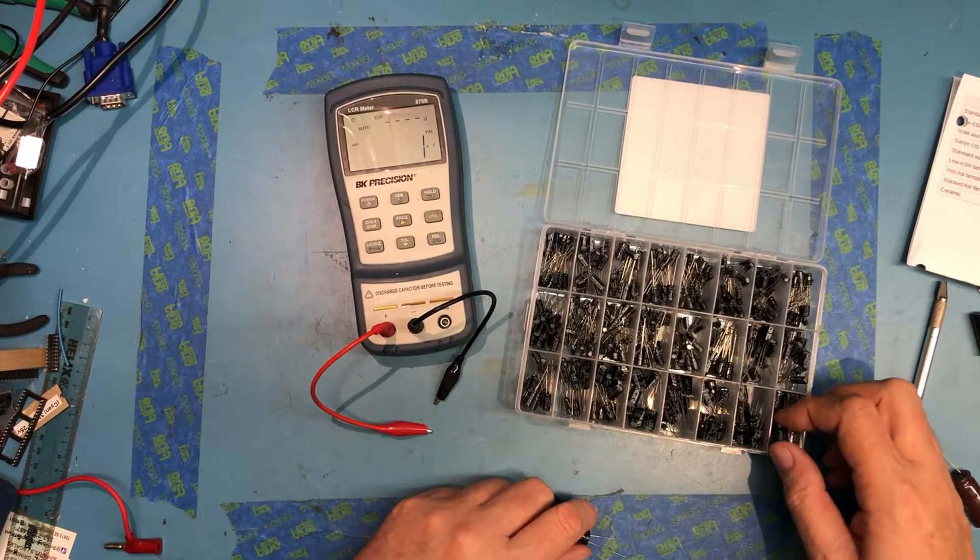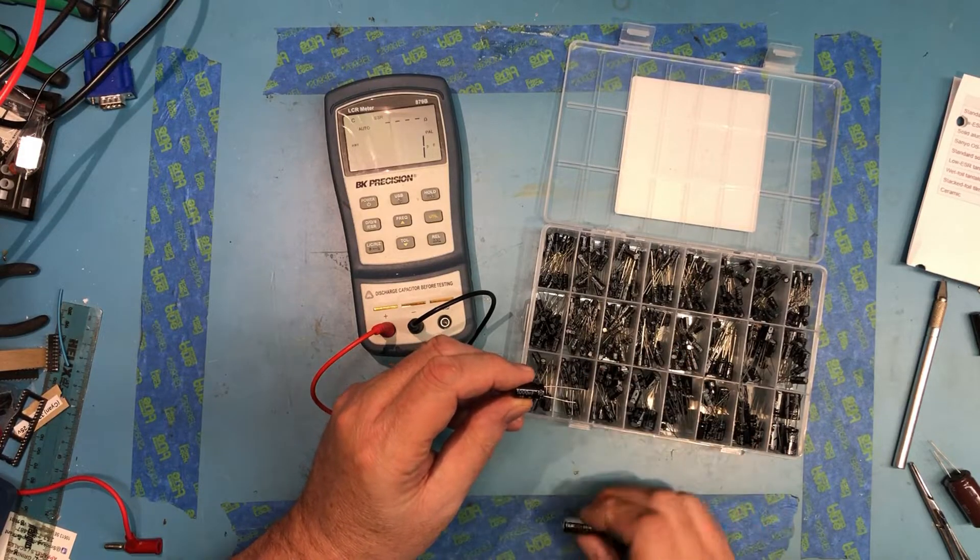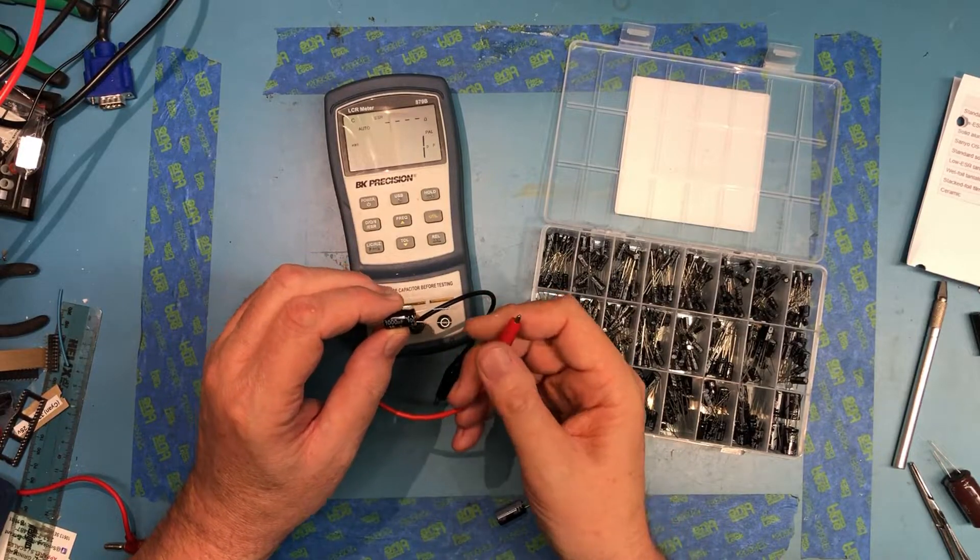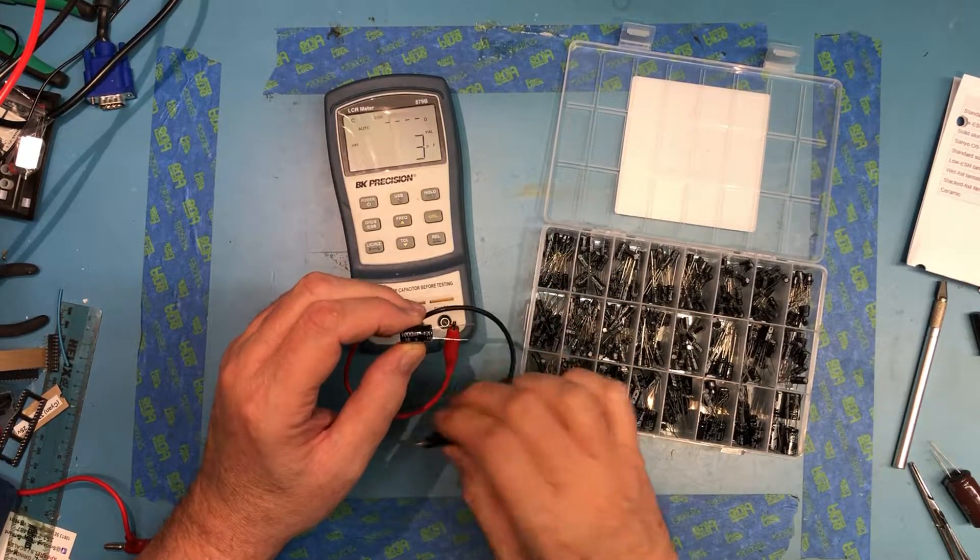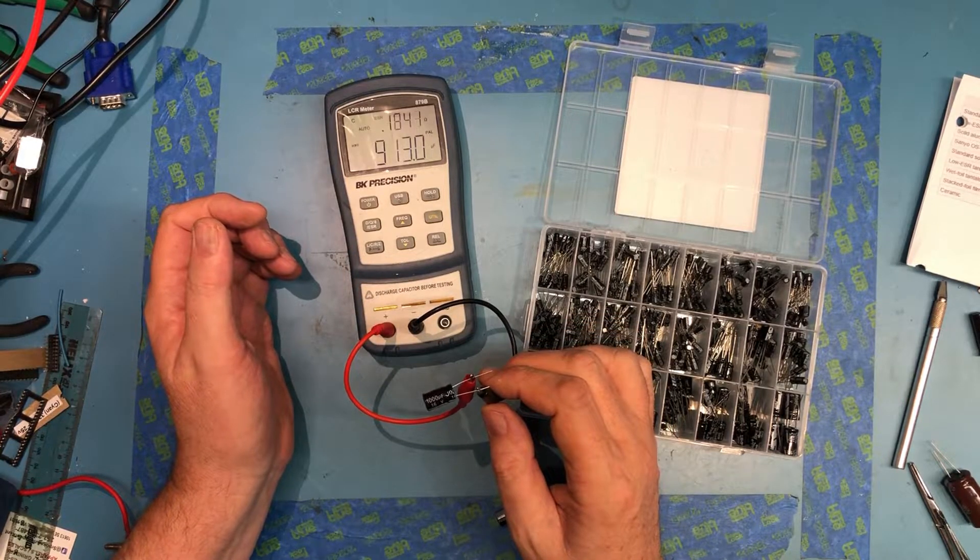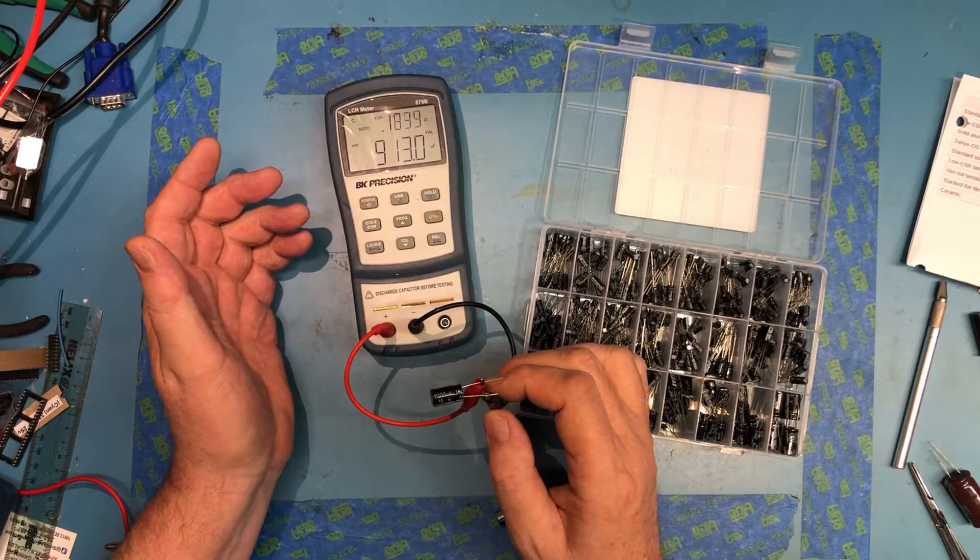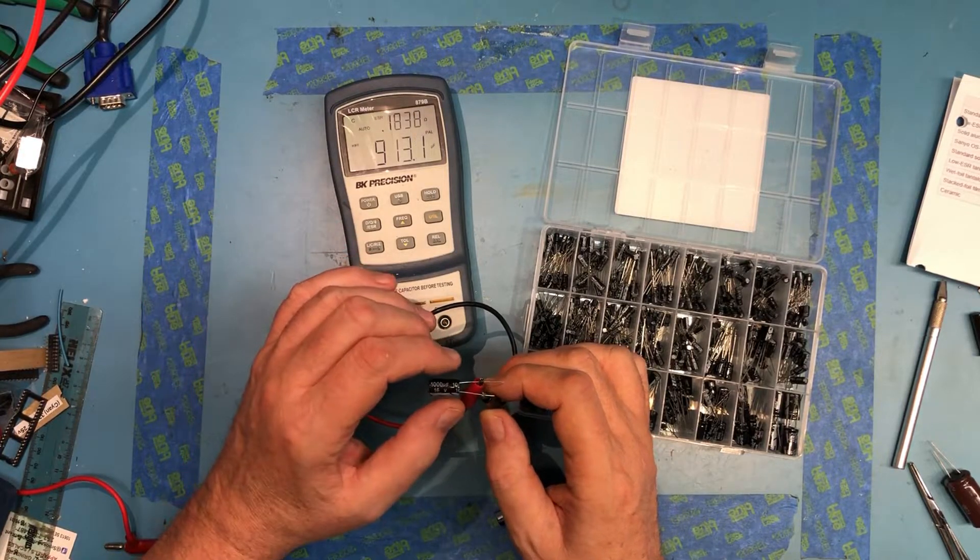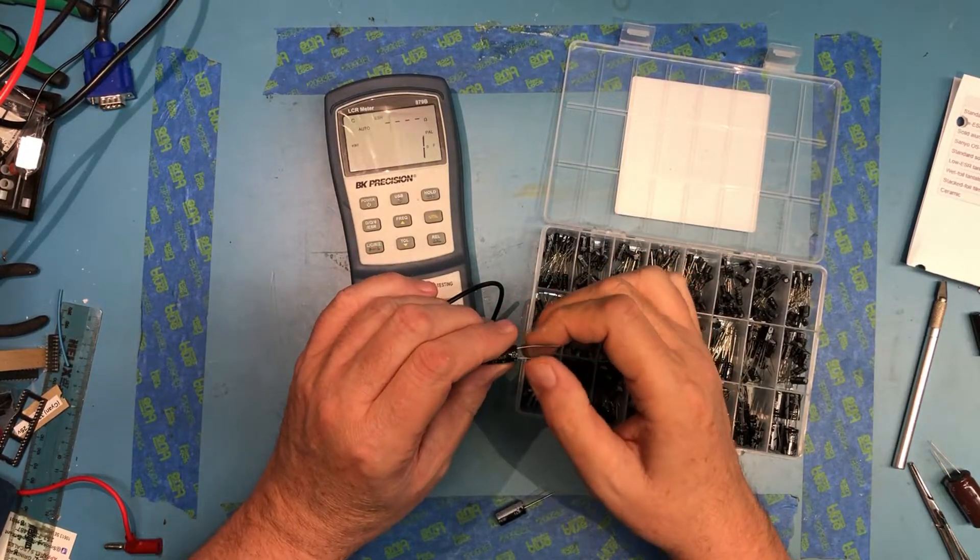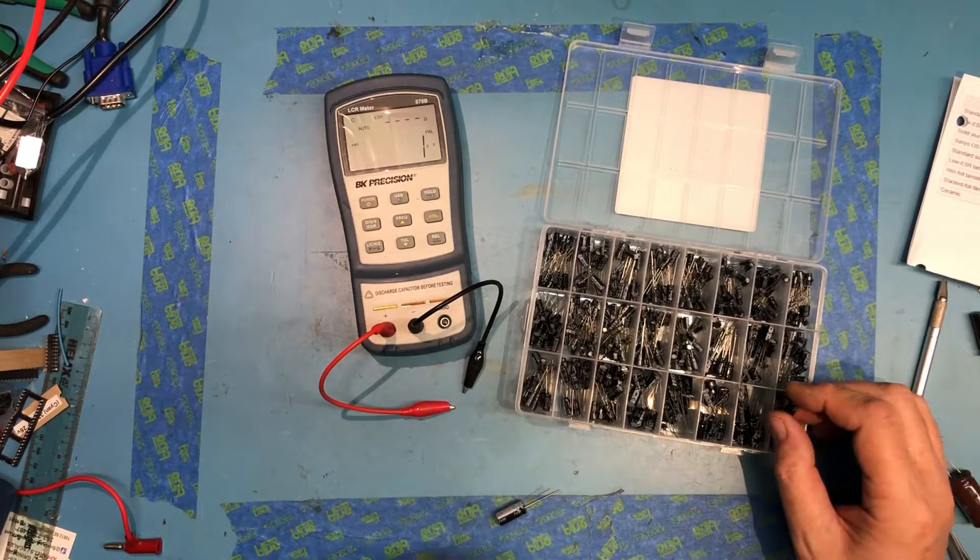Let's now take the, whatever this generic brand is. This is a 16 volt rating versus a 25 volt rating. That's a little physically smaller, but it's still 1,000 microfarad. And it's measuring, you know, 913 microfarad, 0.184 ohms. It's not bad.